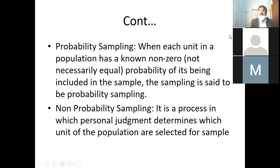Probability sampling: when each unit in the population has a known non-zero, not necessarily equal, probability of its being included in the sample, the sampling is said to be probability sampling. When you are giving equal chance to every individual of the population to be part of your sample, that is called a probability sample.